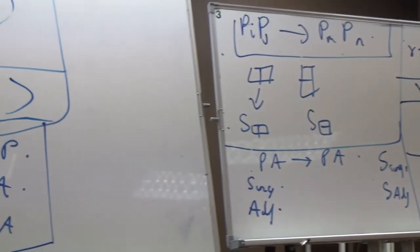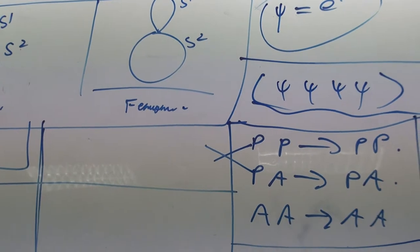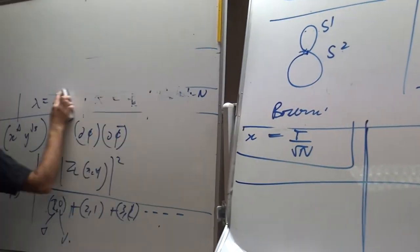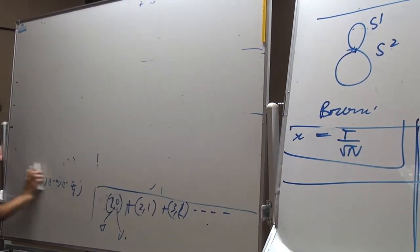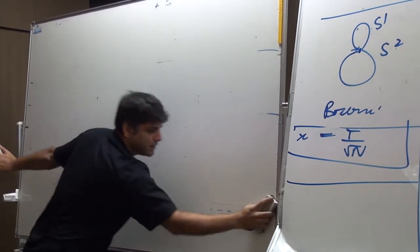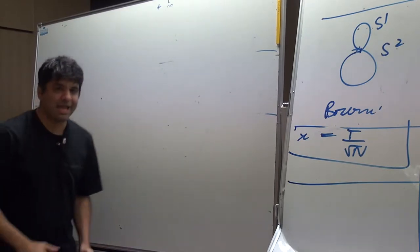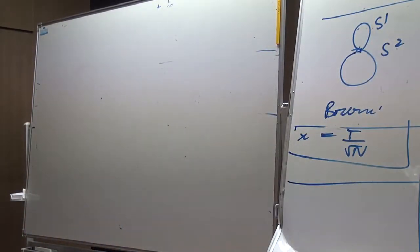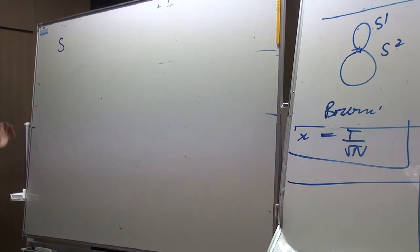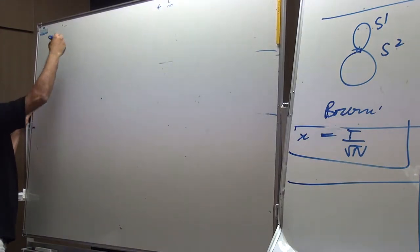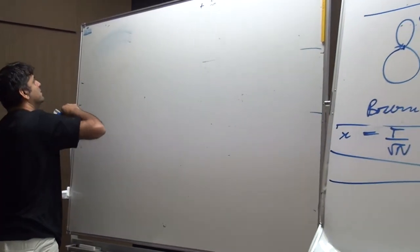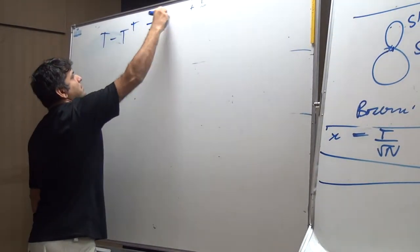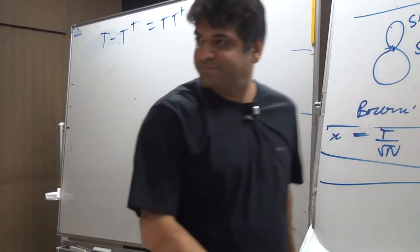The last general thing I want to say before going to the calculation is about unitarity. S-matrices in any consistent quantum process, just because probability is conserved, obey an equation like T minus T-dagger equals something. This is the unitarity equation.